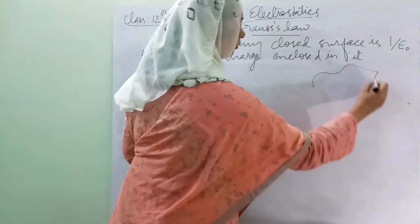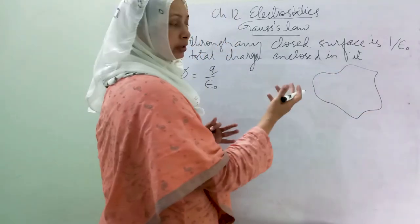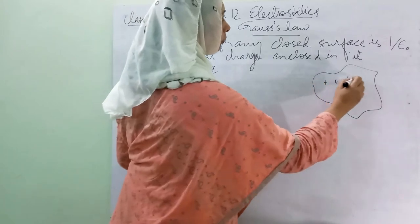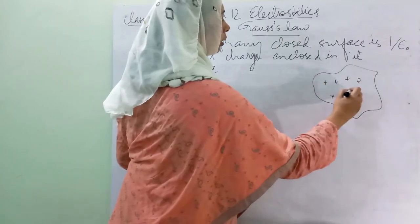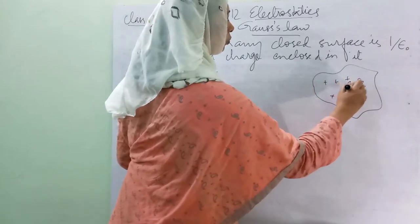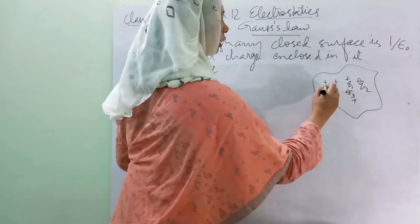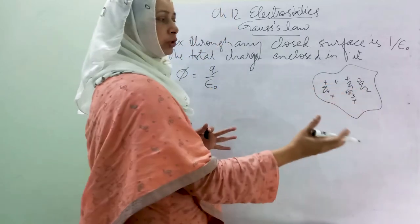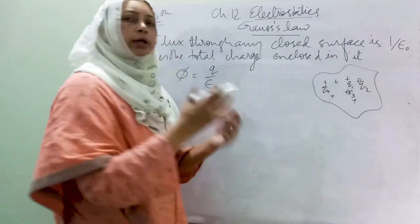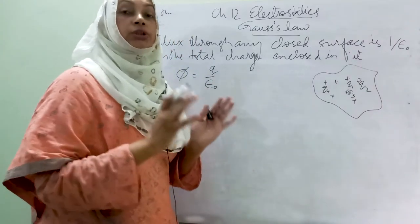So I take an arbitrary shape here and I put different numbers of positive charges - a number of charges being enclosed by an arbitrary shaped closed surface.